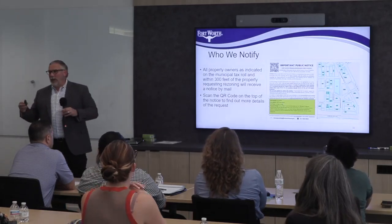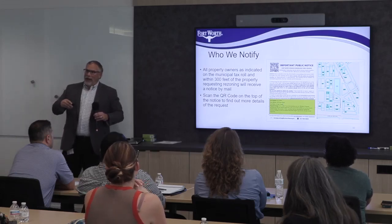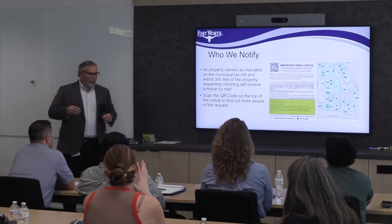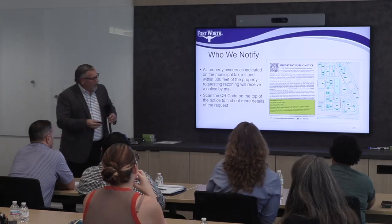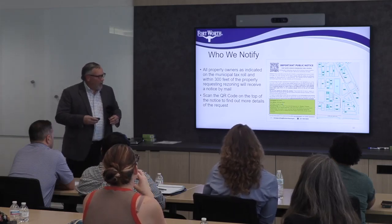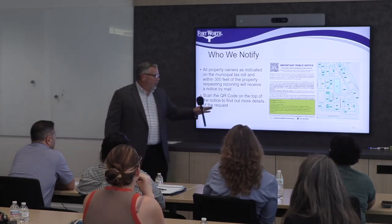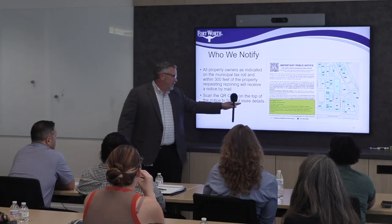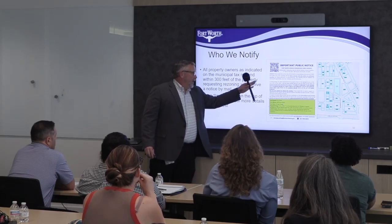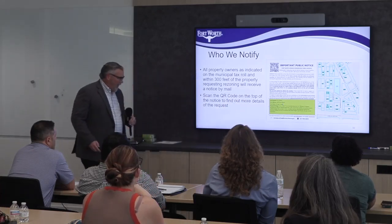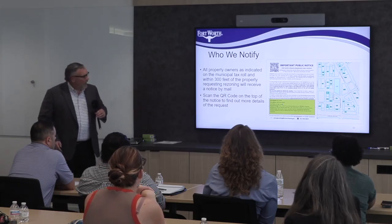It's important to understand who we notify because this is a public hearing process. If you don't do your homework beforehand, you may have trouble at the zoning commission and city council. We notify property owners within 300 feet — we use a notice that shows where the property is on a map, the basic information about what the applicant is proposing, the date of the hearing, and a QR code to find out more details about the zoning case.